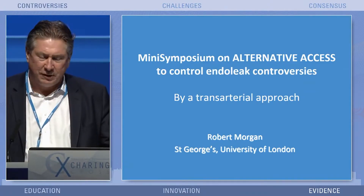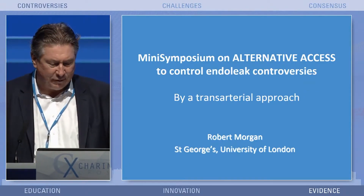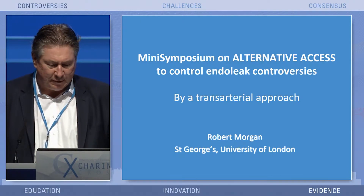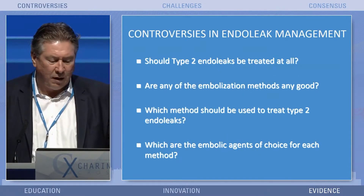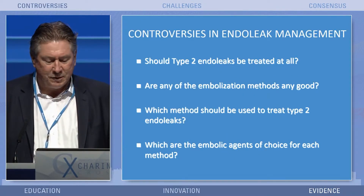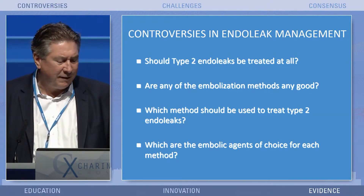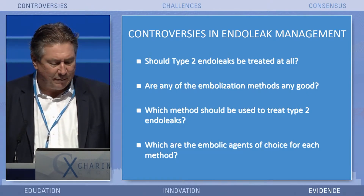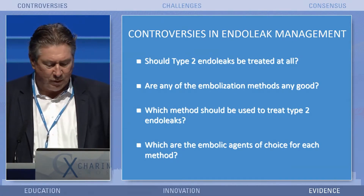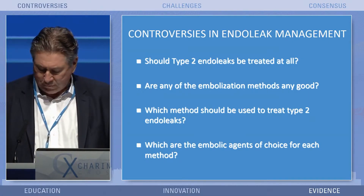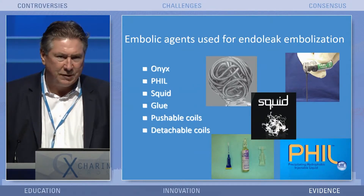This is the start of quite an interesting symposium on alternative access for type 2 endoleaks. My title is: Are any of the embolization methods any good? This is really very important. And then which method should be used to treat type 2 endoleaks? We don't know yet. And which are the embolic agents of choice for each method?